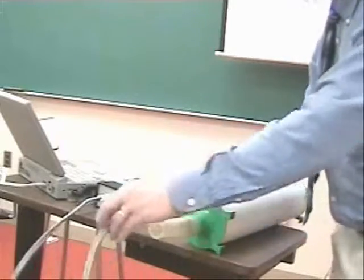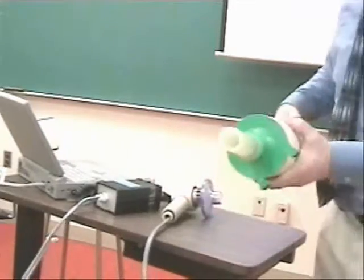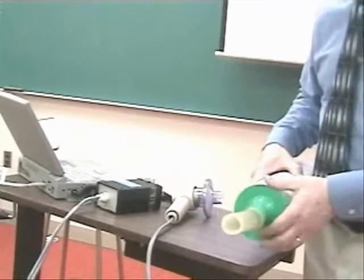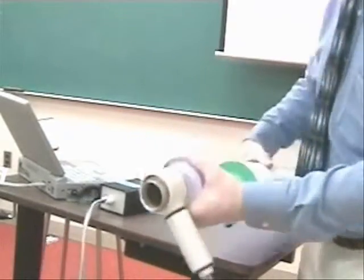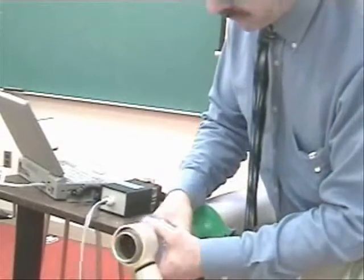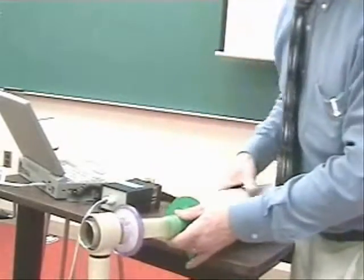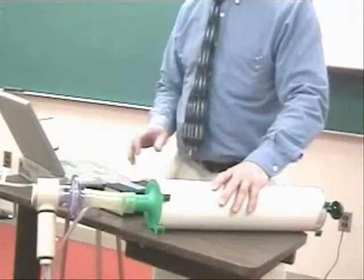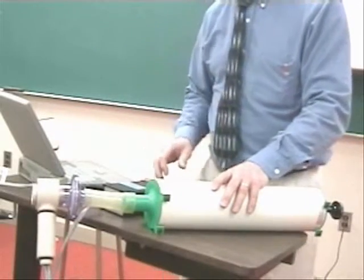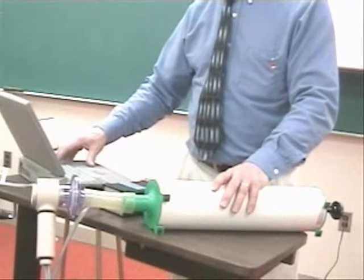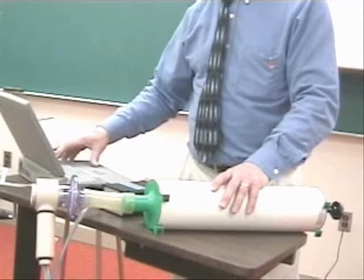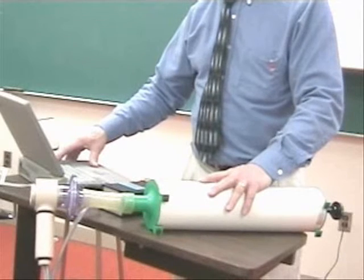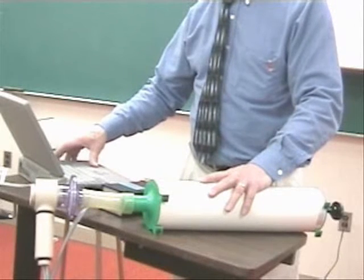This large device next to it is a calibration syringe, which we're going to first use to calibrate the spirometer. We'll attach the pneumotach to the calibration syringe, and then go into the calibration mode, set it to deliver a 3 liter volume. That's the size of this syringe. Room temperature will go with 24.